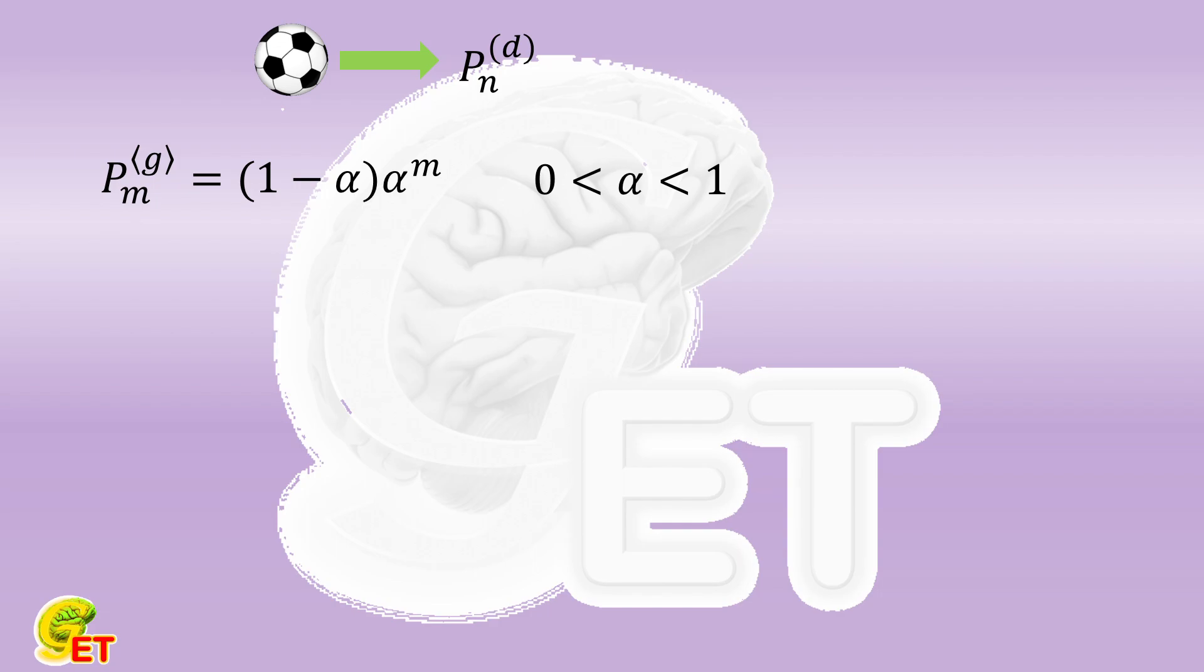The probability of not scoring any goal is therefore 1 - α. The probability of a game ending in a draw is simply (1 - α)/(1 + α).